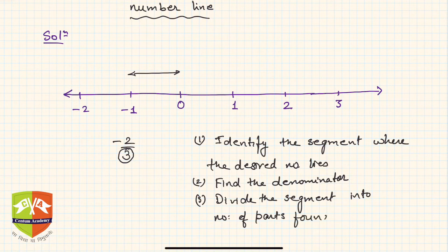In step 2, I found 3, so I'll divide into 3 equal parts: 1, 2, 3 equal parts. Hence, -2/3 will be the second part. This is 1 and this is 2, so this point is -2/3.